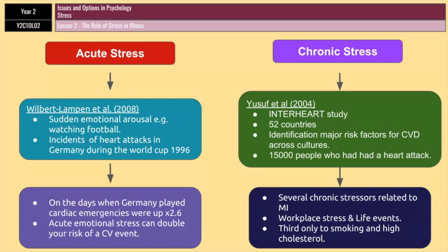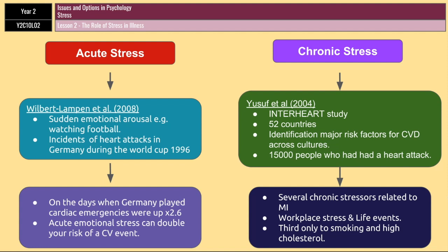So you've had four studies: two on the role of immunosuppression and two on the impact on cardiovascular disorders. As I said before, these studies are quite important. If you can't remember all of them, try to remember at least one from each area. However, remembering all of them would be preferable since you could get an essay on the entire topic or on one or the other, so it's always nice to be able to flesh those out where possible.